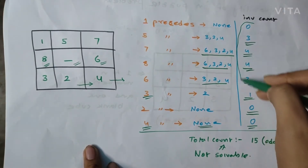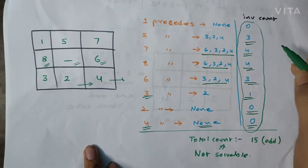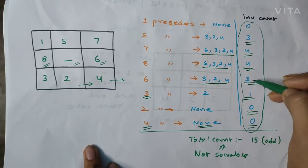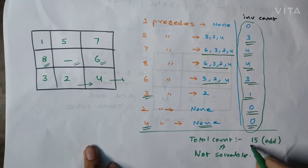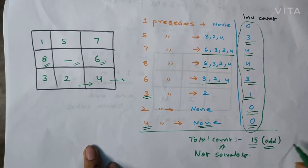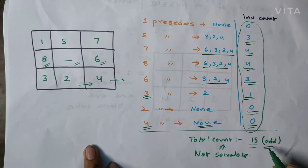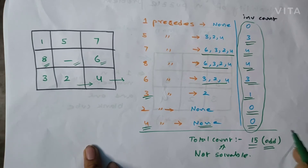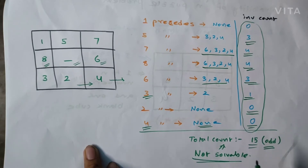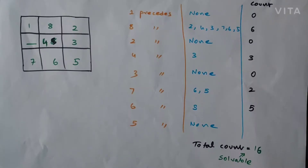We now sum up all the inversion counts: 3 + 4 + 4 + 3 + 1 = 15. Since 15 is an odd number, and the condition for solvability requires an even inversion count, we can say that this initial state problem is not solvable.